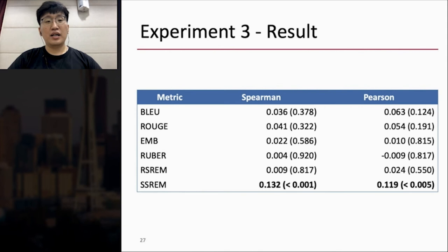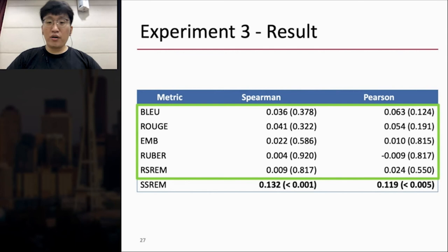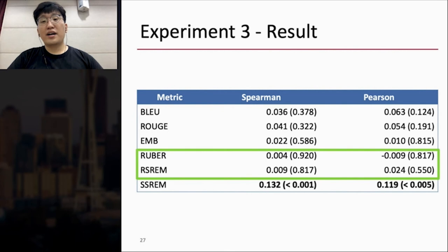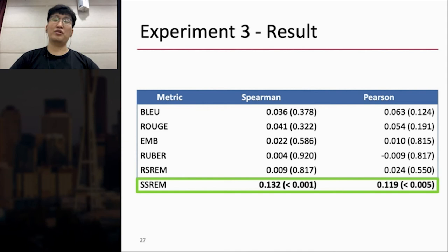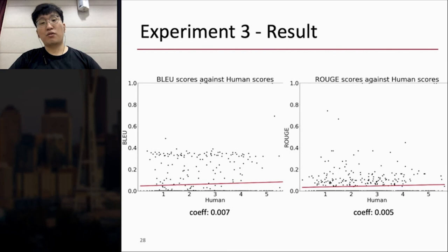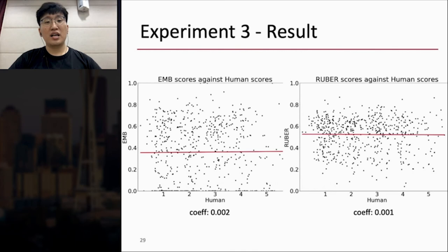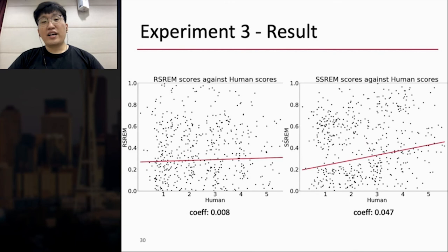So this is the result of measuring correlation with human scores experiments. All baselines are not correlated with human scores, and especially RUBER and RSREM are worse than BLEU and embedding, since they learn the different conversation corpus. But SSREM outperforms all other methods for two correlations with low p-values. I also draw a scatter plot of the human and model scores. BLEU and ROUGE have many zero values, and the lines are flattened, and the lines of the embedding and RUBER are also flattened. But SSREM shows a higher positive correlation with human scores than other baselines.